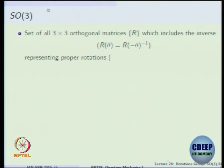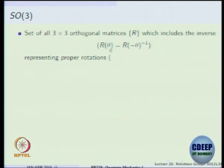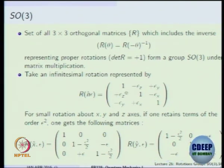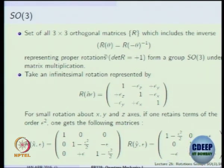SO3 is the set of all 3x3 orthogonal matrices which includes the inverse. The inverse of the rotation matrix R is obtained by changing the sense of rotation to minus theta. The product of R with its inverse gives the identity operator. Proper rotation means determinant R is plus 1 — that forms the group SO3 under matrix multiplication. Just giving the set of orthogonal matrices is not enough; you have to give the group operation, which is matrix multiplication.